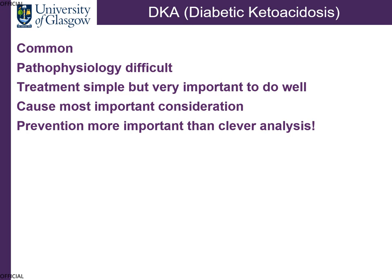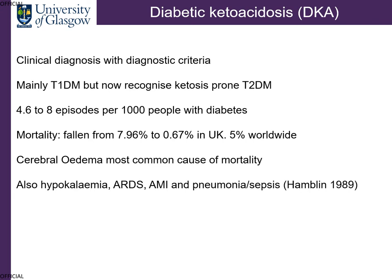Sometimes you can get a bit fixated with all the numbers when the patient initially presents. DKA is a clinical diagnosis with biochemical diagnostic criteria, mainly in type 1 diabetes, but we do recognise there is something called ketosis-prone type 2 diabetes mellitus. We roughly get around five to eight episodes per thousand people with diabetes, and mortality in the UK has improved significantly and is less than one percent, but worldwide this can be five percent. This is largely due to standardised protocols in various hospitals.